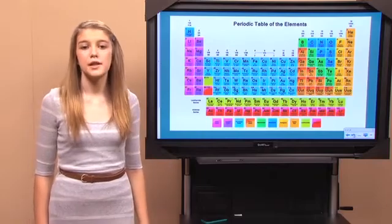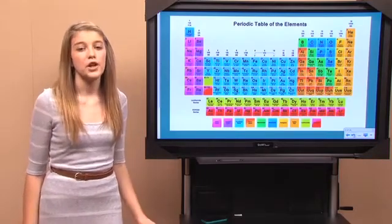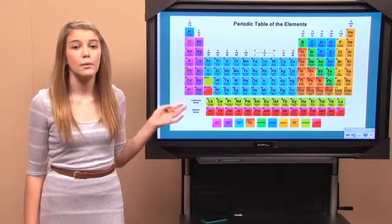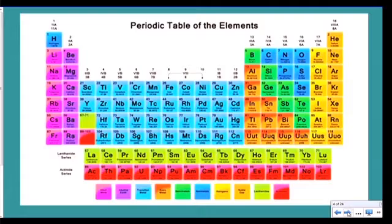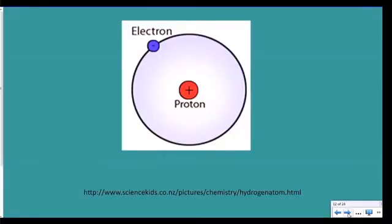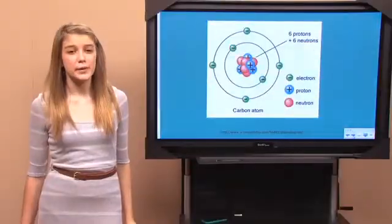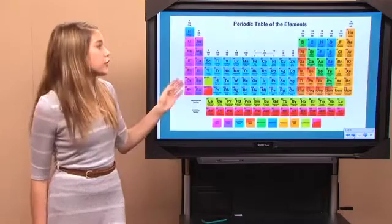And remember how we said protons and neutrons have mass, but electrons don't? Well, the further down the periodic table you go, the more protons and neutrons are in the atom, so the heavier it gets. Hydrogen up there is the lightest because it only has one proton. Carbon has six protons and six neutrons, which gives it a mass of 12, so it's further down the table.